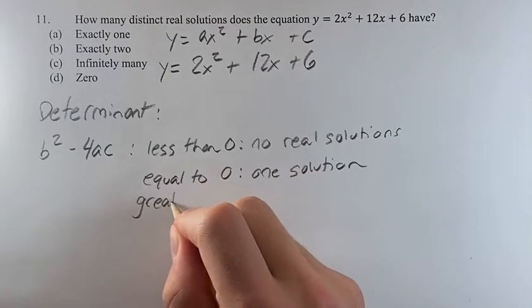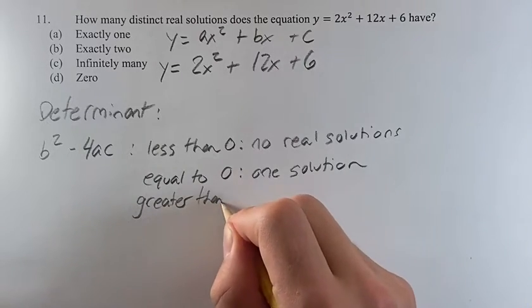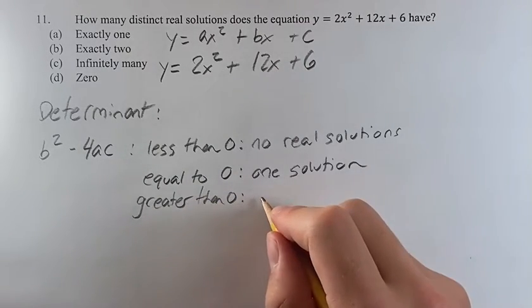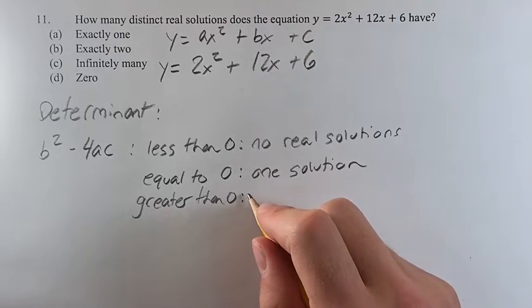If it's greater than 0, there's two solutions. And you can think of this as the effect that the square root has on the equation in the quadratic formula.